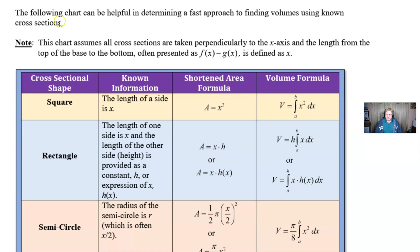Now, one thing about this chart is it assumes that all cross sections are perpendicular to the x-axis, and the length from the top to the bottom to form that base is represented as like f minus g of x in this case. And we're going to define that as x. In other words, x is like that length s that we used to say. So obviously, the square is the one of the easier ones to work through, and we just integrate that length, which we called x squared, from the top to the bottom.